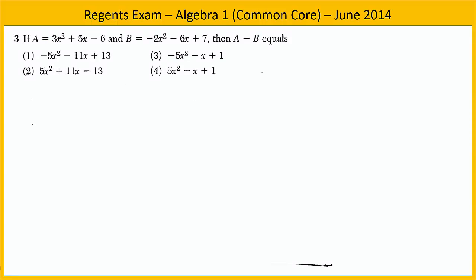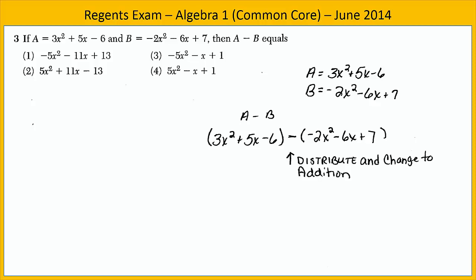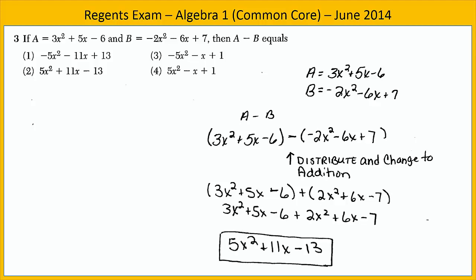In exercise three, we're given two polynomials, and we're asked to find the difference a minus b. Let's begin by organizing the information that we're given. a is 3x squared plus 5x minus 6. b is negative 2x squared minus 6x plus 7. We're asked to find the difference a minus b. Let's begin by writing this out. Put each of the polynomials in parentheses, and put the subtraction in the middle. The parentheses are important because we need to distribute that subtraction as a negative, and change our sign to addition. We do that, and then we can combine like terms. And we find 5x squared plus 11x minus 13 is the difference a minus b. The answer is choice two.